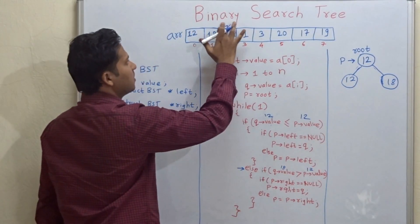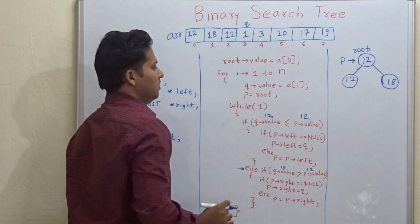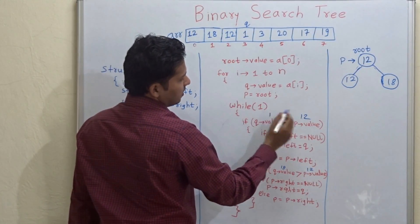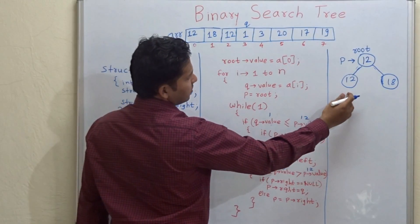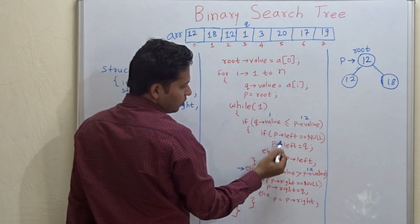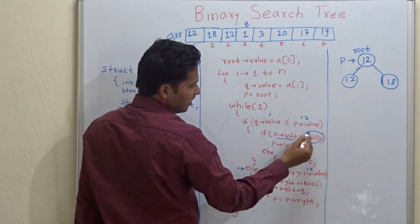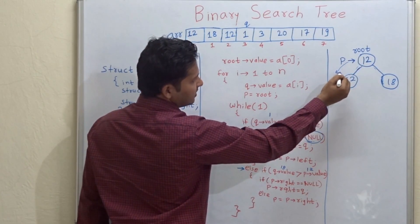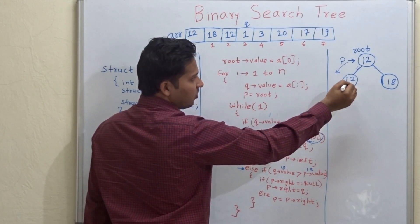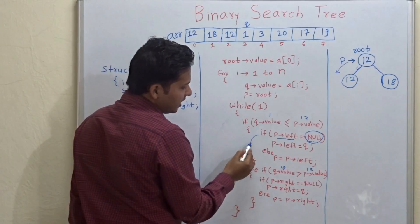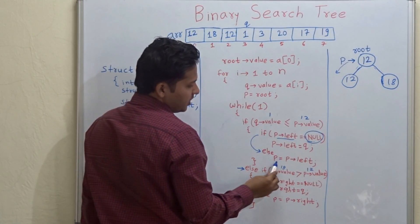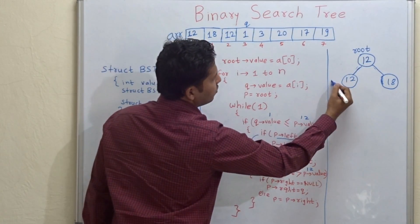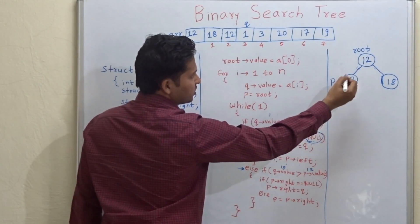Going to the next value: 1. Check whether 1 is less than 12 — yes, 1 is less than 12, so we go to the left of 12 and check whether the left is null. Here it is not null; there is already a node present. So we go to else: p equals p->left, meaning p shifts to the left child of p.